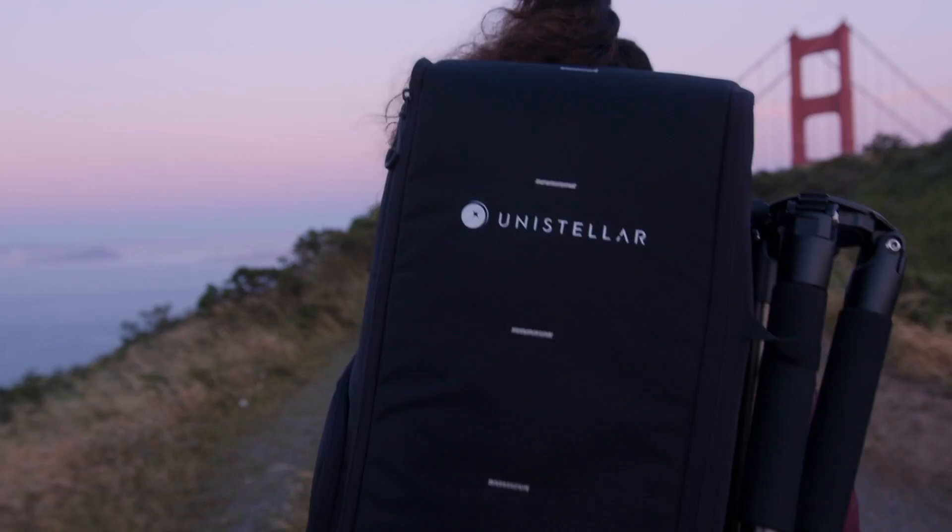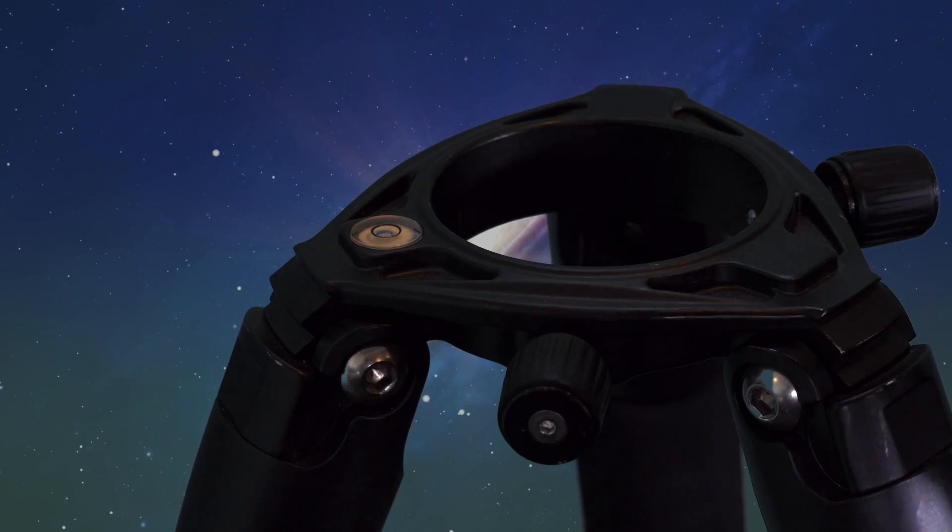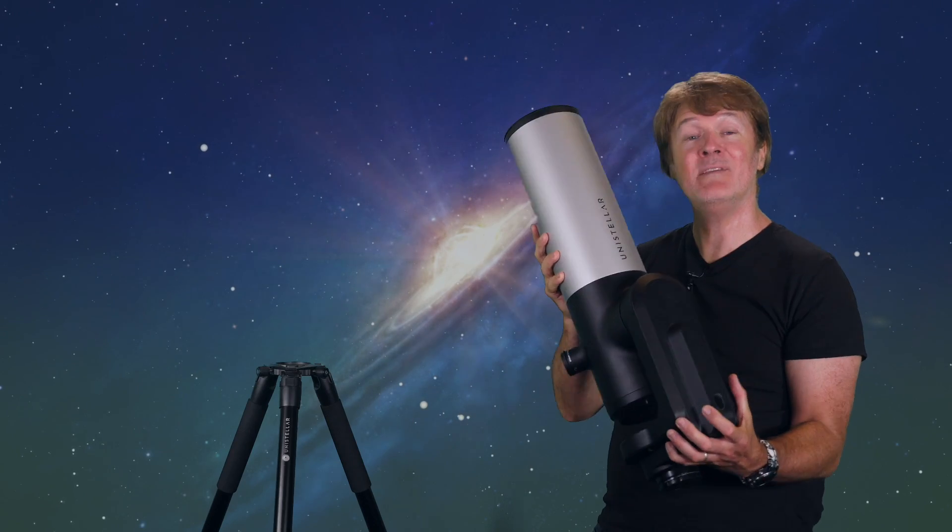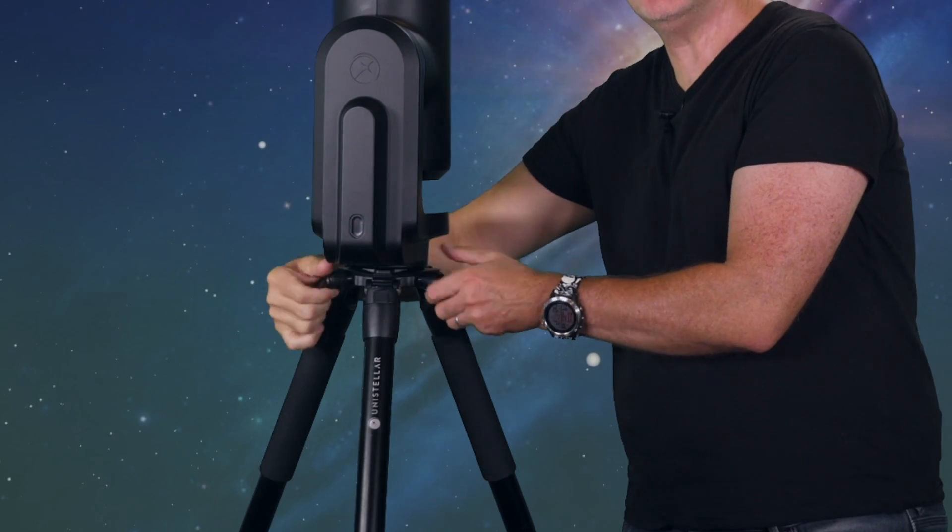First, what's really cool about the EVscope 2 is its ease of installation. You just have to open the tripod, check the bubble level right here, take the EVscope 2 by the base, pop it in, tighten the screws. It's that easy.